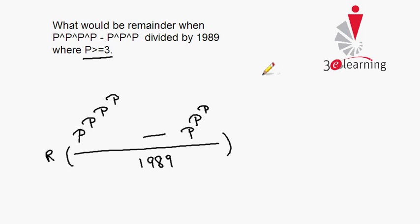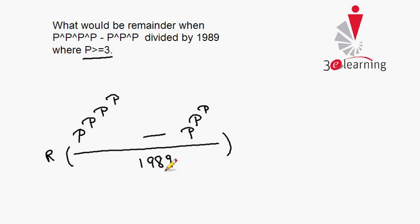Today I am going to solve a question: p raised to power p raised to power p raised to power p, minus p raised to power p raised to power p, divided by 1989. What would be the remainder under the condition p is greater than or equal to 3?